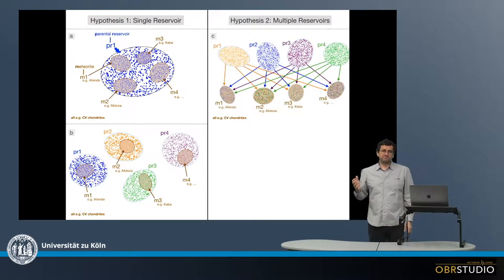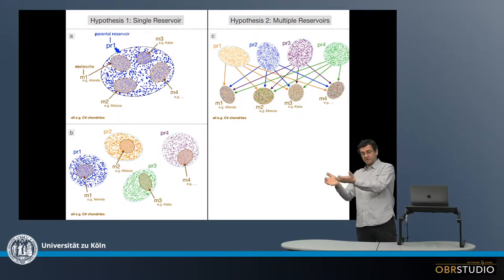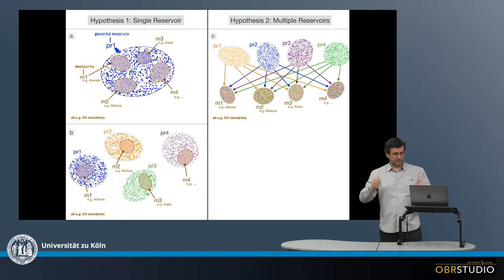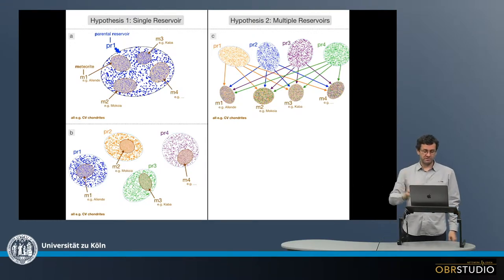And regarding mixing, so in this case, there would be multiple reservoirs within the protoplanetary disk, and these are all mixed, so the chondrules from all the various reservoirs are mixed together to form Mokoya, Allende, Kaba and so on. So this is quite a funny mix of all the chondrules from all the various reservoirs.